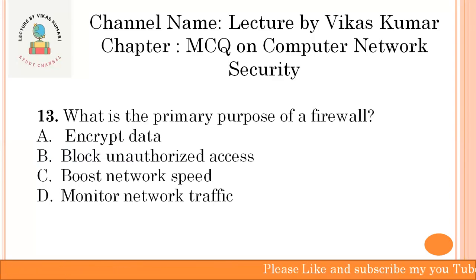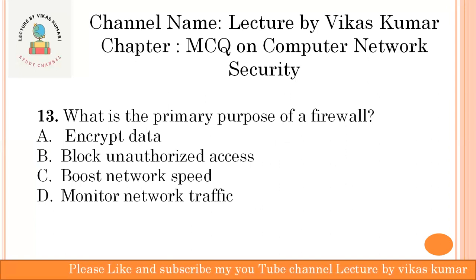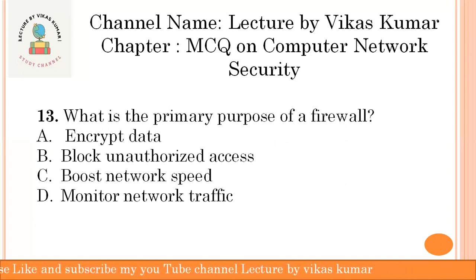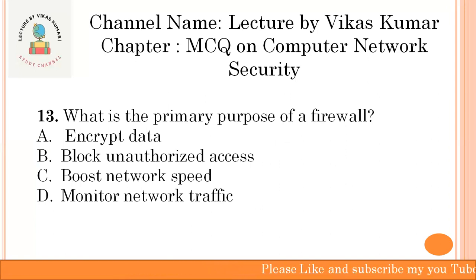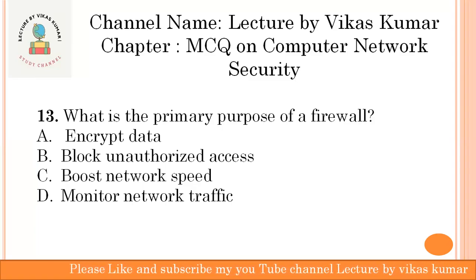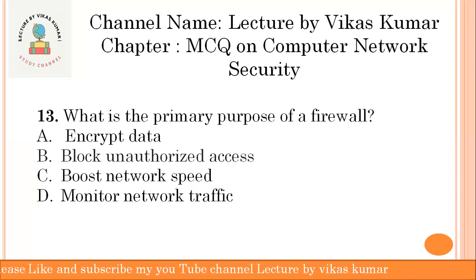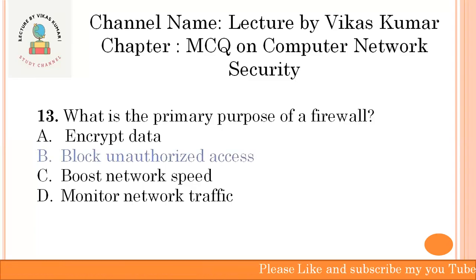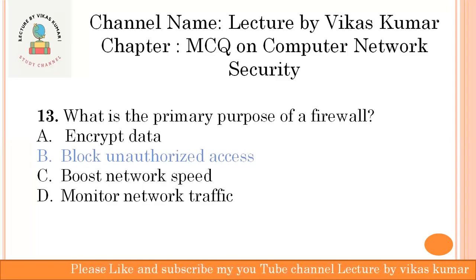What is the primary purpose of a firewall? A firewall is a kind of mechanism we use to protect our system — to block unauthorized access. Blocking unauthorized access is the primary purpose of a firewall.